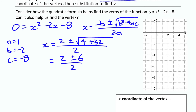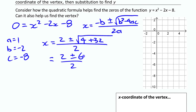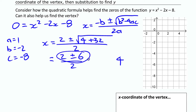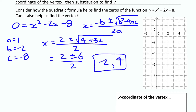Normally you'd evaluate the top and then divide by 2. So 2 + 6 = 8, divided by 2 = 4. Or 2 − 6 = −4, divided by 2 = −2. Those are the two x-intercepts: −2 and 4.